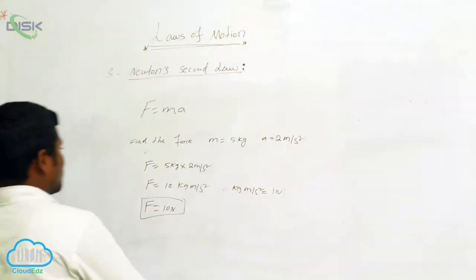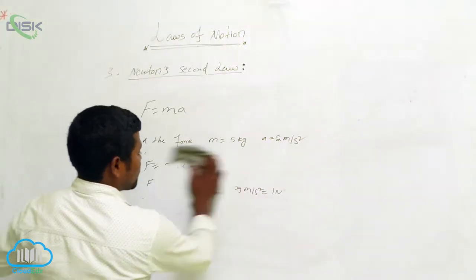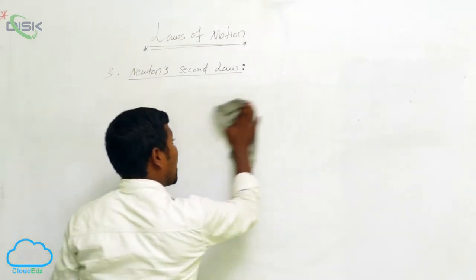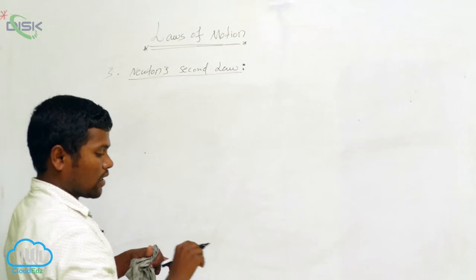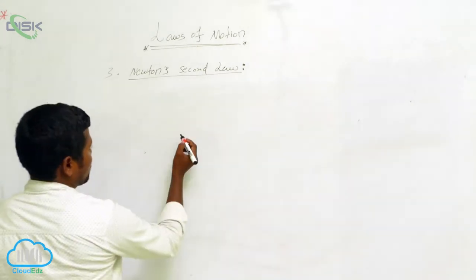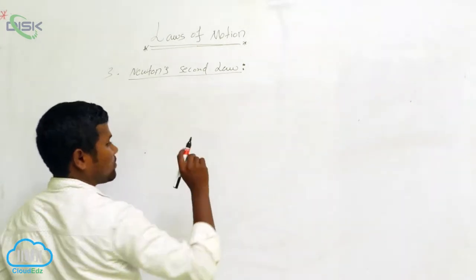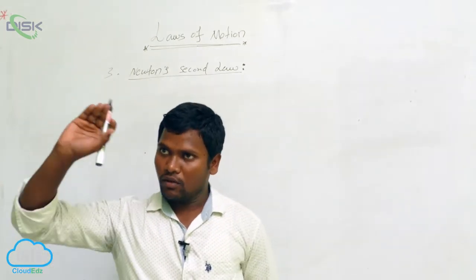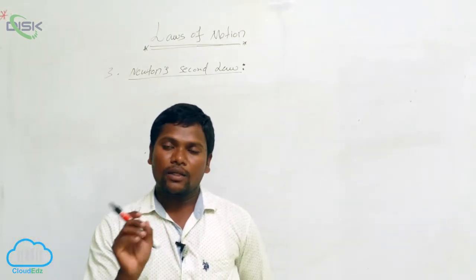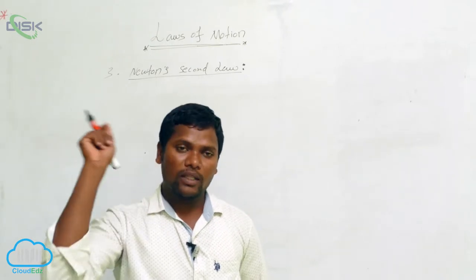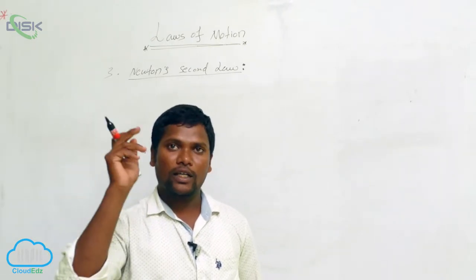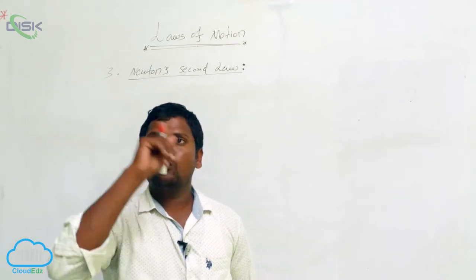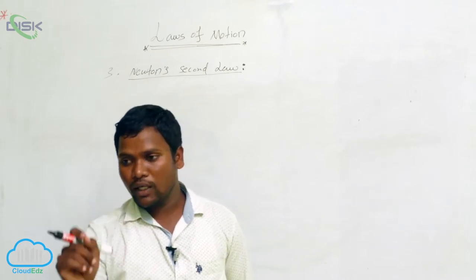Next, let us look at a case under Newton's law. Take a thread and tie something on one end, then hold the other end. If you apply force, the object simply revolves — the radius is fixed, so it keeps revolving around that pivot point.